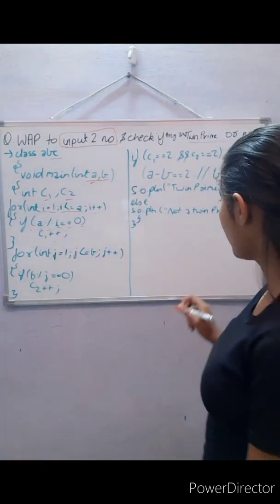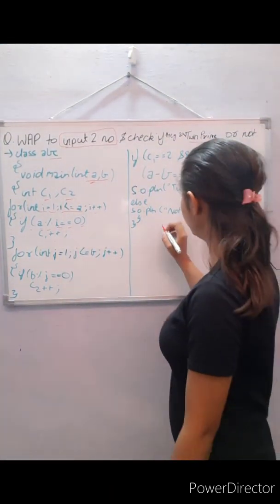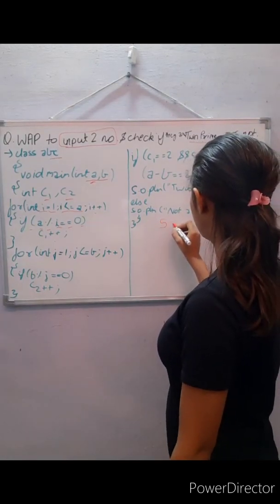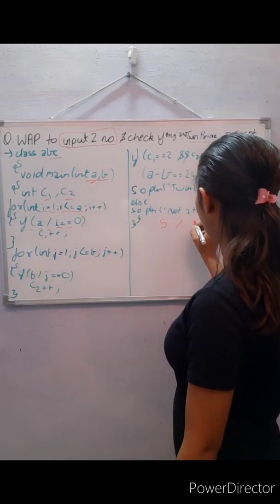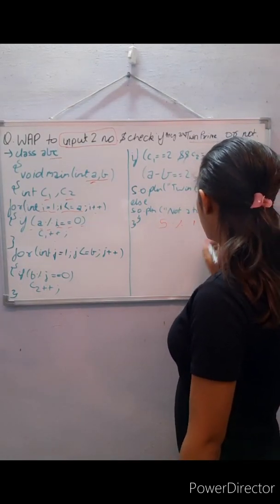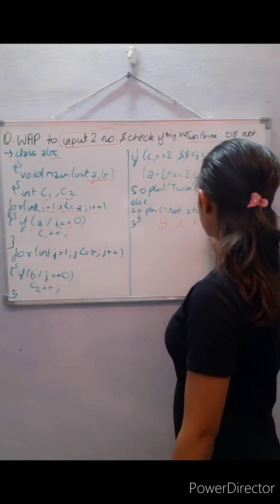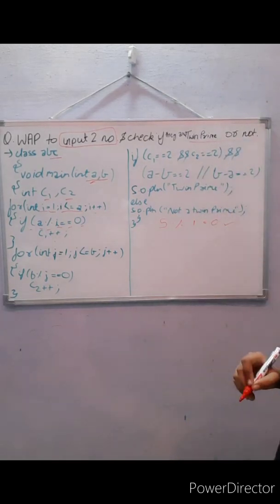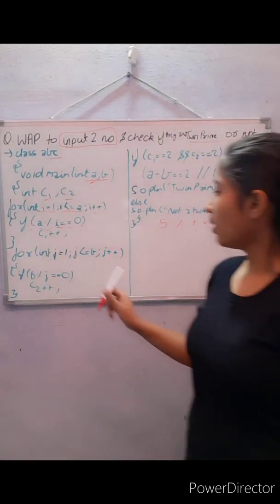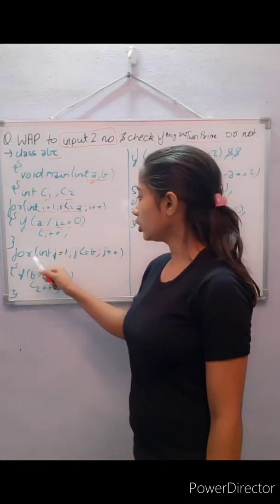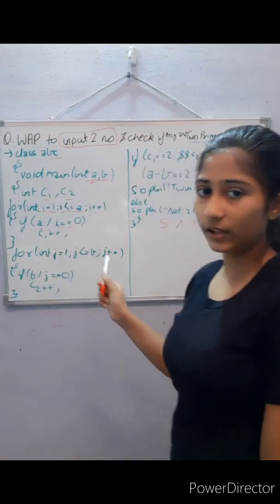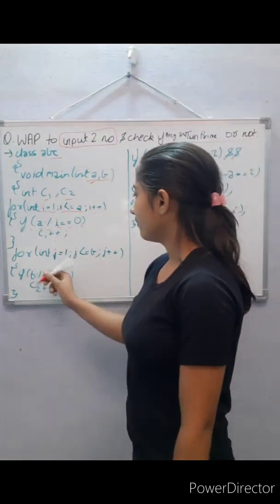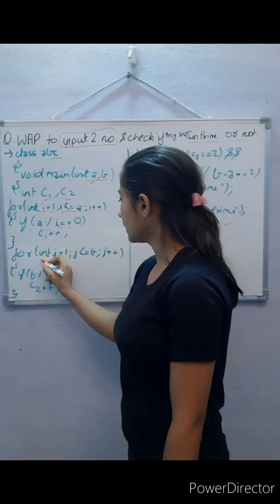For example, if the number is five and the modulus gives zero, we'll count that. Moving on to check the second prime number, we are going to apply another for loop. In this loop we are taking integer j.